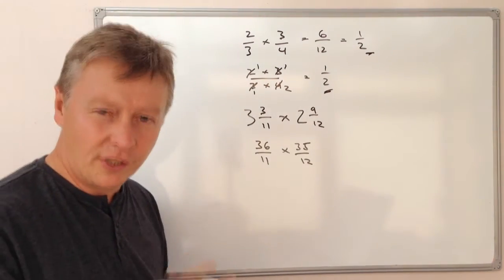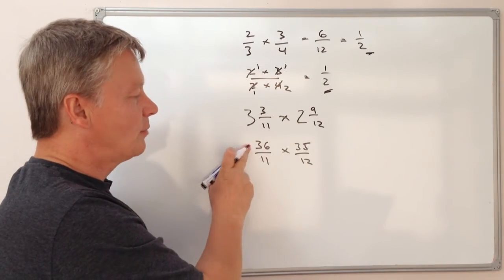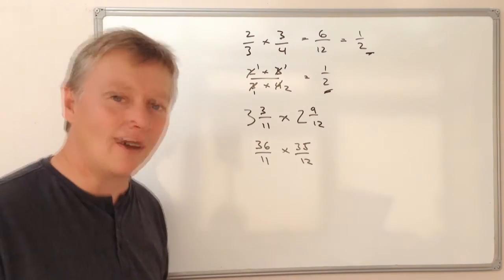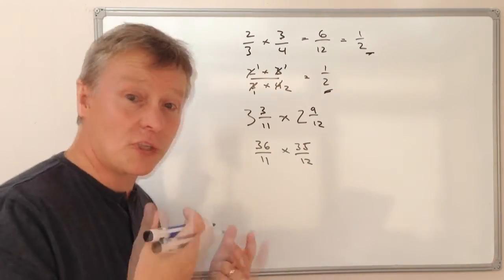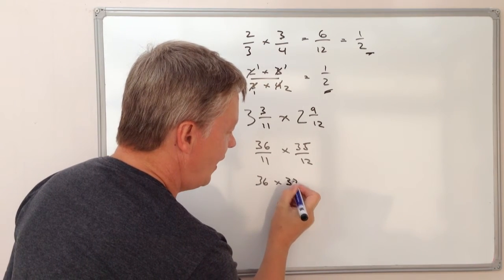OK, so I'm going to try and reduce this and make it a little bit easier to deal with. I could multiply 36 times 35 and divide that by 11 times 12. It's going to be hard work, so I want to make the numbers as small as I can. So let's just rewrite it as that.